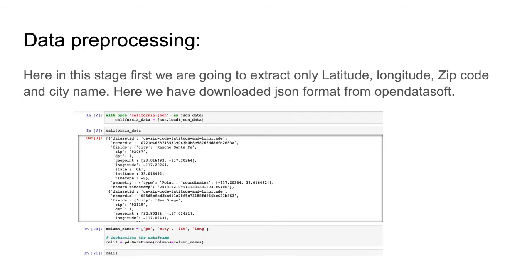In the data preprocessing stage, step one involves extracting only longitude, latitude, zip code, and city name. As mentioned, the website also provides time zone data, which we are not going to use in our project. The data was downloaded in JSON format, so we need to extract all the necessary features from it.